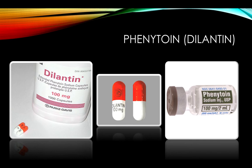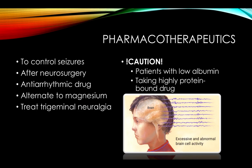Dilantin controls seizures by decreasing the sodium influx into the cell. Pharmacotherapeutically, Dilantin is used to control seizures, prevent and treat seizures during or after neurosurgery, as an anti-dysrhythmic specifically when caused by digoxin, as an alternate to magnesium to treat preeclampsia in mothers, and to treat trigeminal neuralgia. Be careful with patients who have low albumin or are taking a highly protein-bound drug, because Dilantin is highly protein bound.